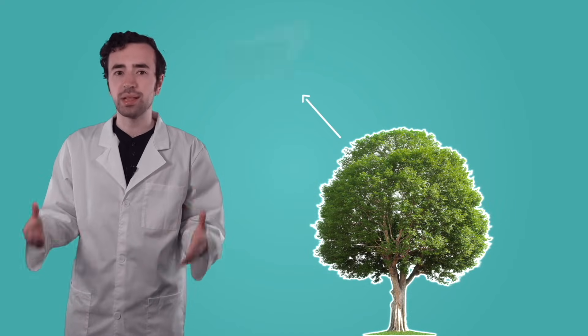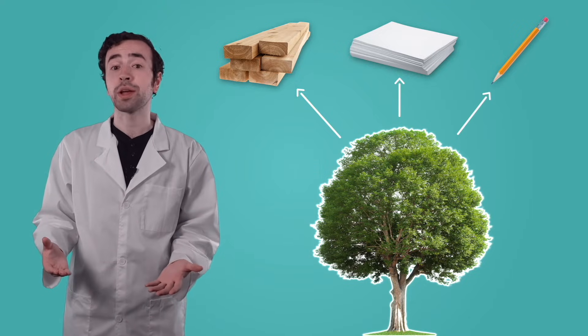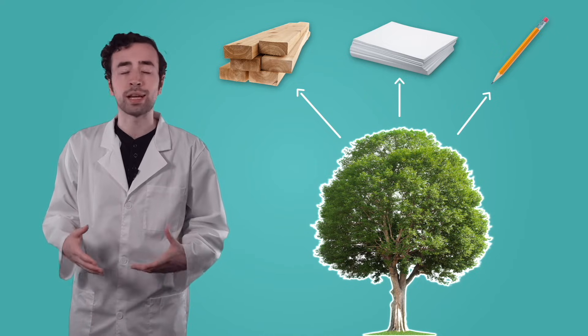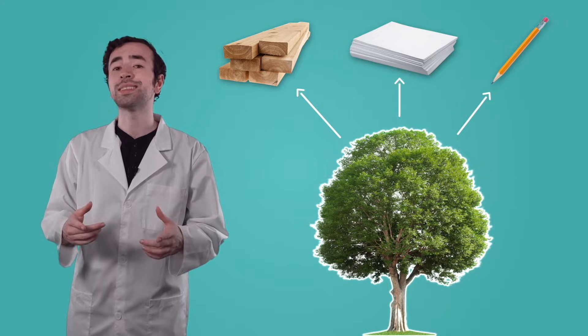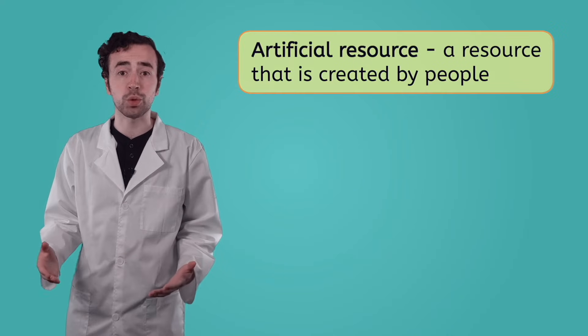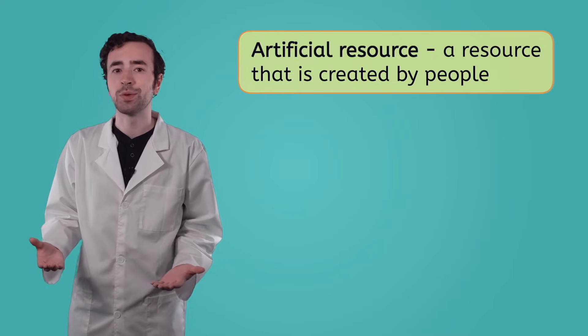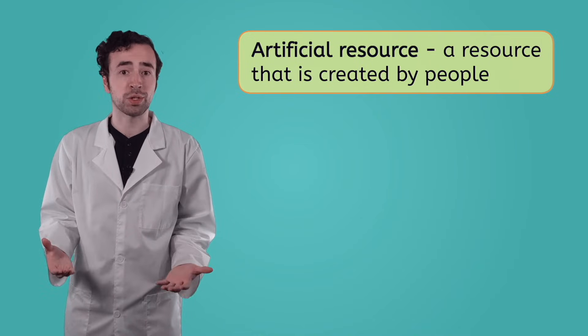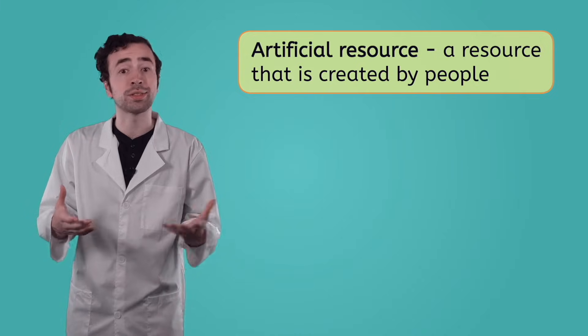We can use natural resources to meet our survival needs, as sources of energy, and to grow beautiful gardens. But we can also use natural resources to create new things. For instance, the wood from trees can be turned into planks to build with, paper to write on, or pencils to write with. Once humans change a natural resource to be used in a new way, like building materials or tools, the resource is then called artificial. Artificial resources are resources created by people, which is why they're also called human-made. These aren't found in nature.